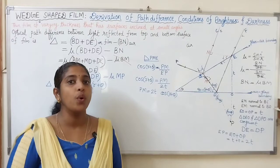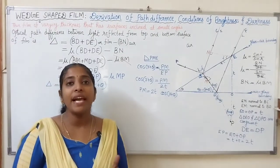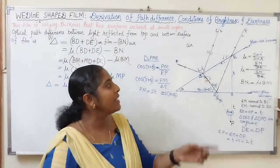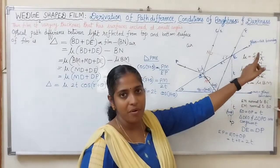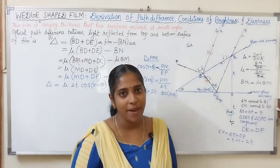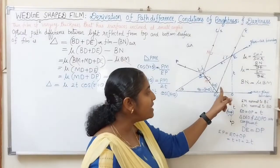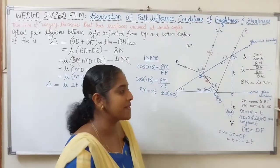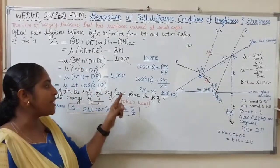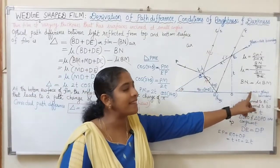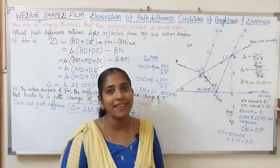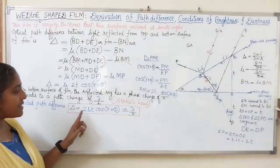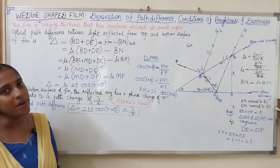Now we have to check for any phase change due to Stokes' law. According to Stokes' law, if light is reflected at a rarer to denser boundary, there will be a phase change of π, corresponding to a path difference of λ/2. At the top surface, reflection is at a glass to air boundary — denser to rarer — so there is no phase change. But at the bottom surface, reflection is at an air to glass boundary — rarer to denser — so there will be a phase change of π. Due to Stokes' law, a path correction of λ/2 is added, giving the corrected path difference: δ = 2μT·cos(R + θ) ± λ/2.